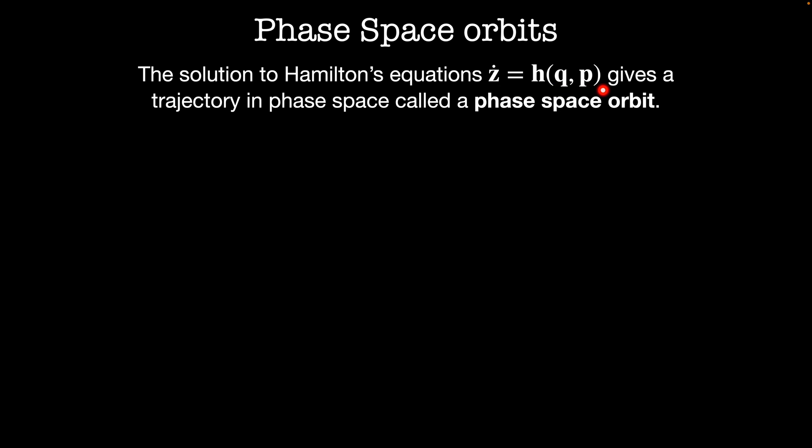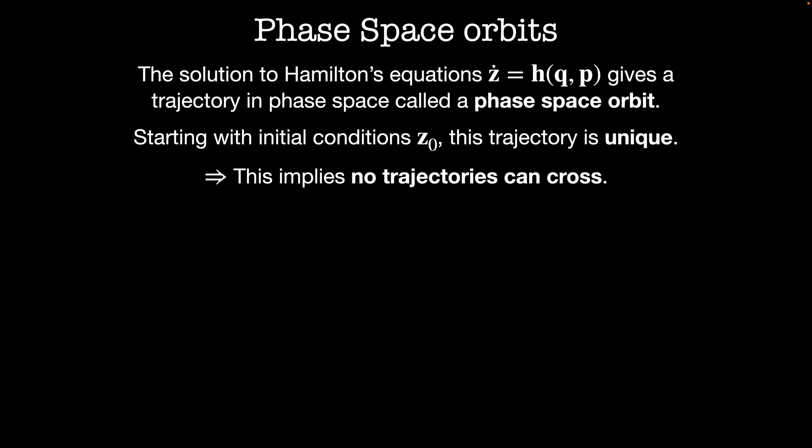The trajectories we just solved for, the solution to Hamilton's equations, are called orbits in phase space. Starting at a particular set of initial conditions given by a point in phase space, we integrate along the vector field and we get a phase space orbit. One of the most important points we'll make today is that starting with some set of initial conditions z naught, the resulting trajectory in phase space is unique. This is a theorem. I'm not going to prove it right now, but we'll need it going forward in order to prove some other results.